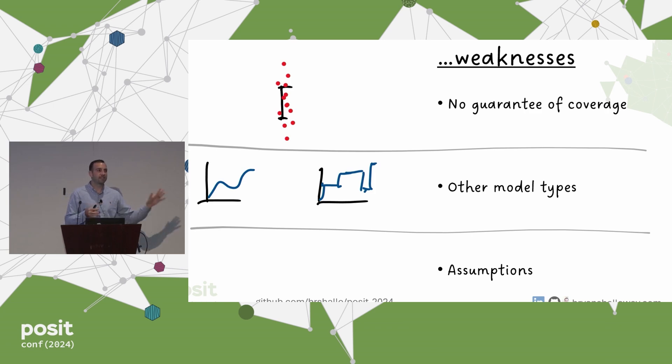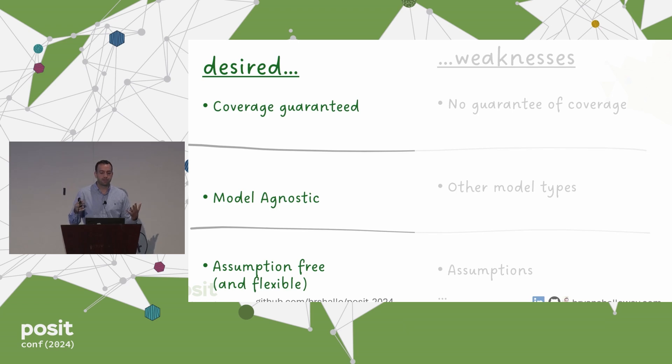And then also these types of prediction intervals from simple linear regression come with a lot of assumptions. A big one is that they assume constant variance across observations. But if we think back to the example with used cars, you might think that a car that has 10,000 miles on it is going to have a lot less uncertainty in terms of what the potential price range is compared to a car with 100,000 miles on it that may have a lot more uncertainty in terms of what the potential price is. So what we want then is some type of model and procedure that is going to give us some guarantees around coverage, is going to be relatively model agnostic so we can use different types of fitting procedures, and it's going to be mostly assumption-free.